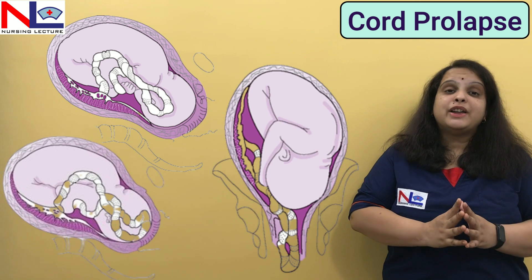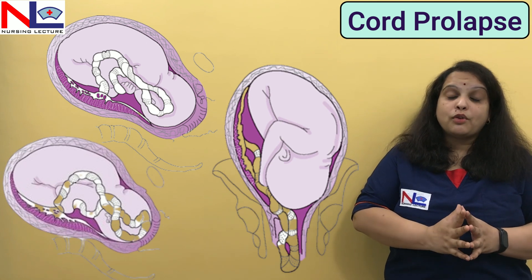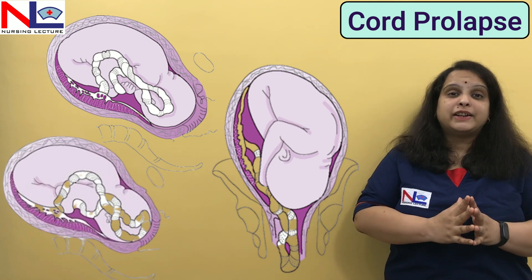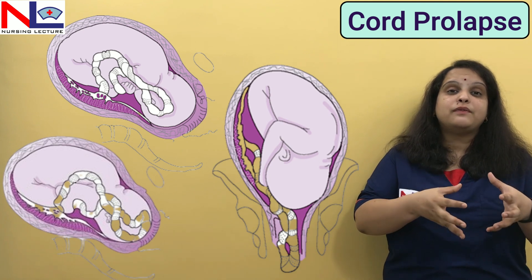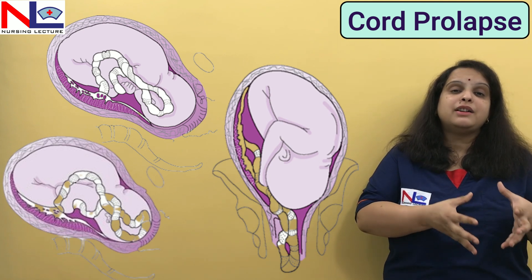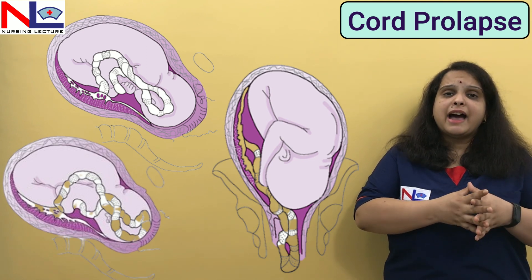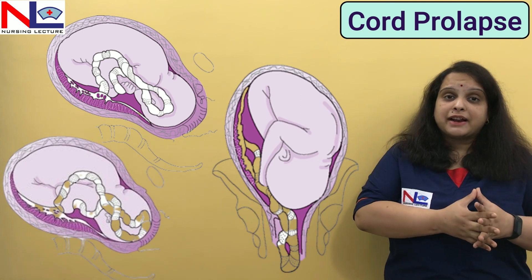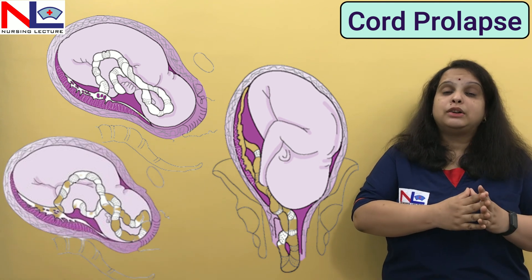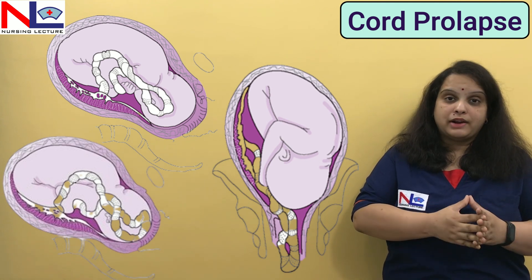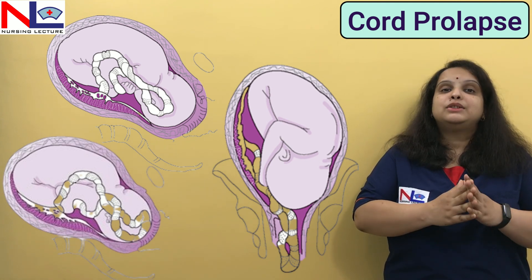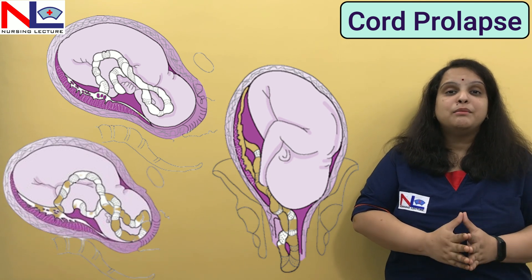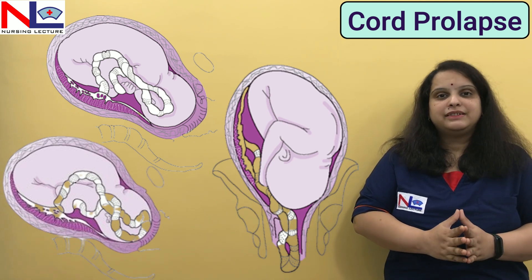In this lecture, we have discussed the condition of cord prolapse, the clinical varieties depending on the descent of the umbilical cord, and the risk factors that provoke the cord to prolapse. In the next part, we'll be discussing about its management. Thank you.